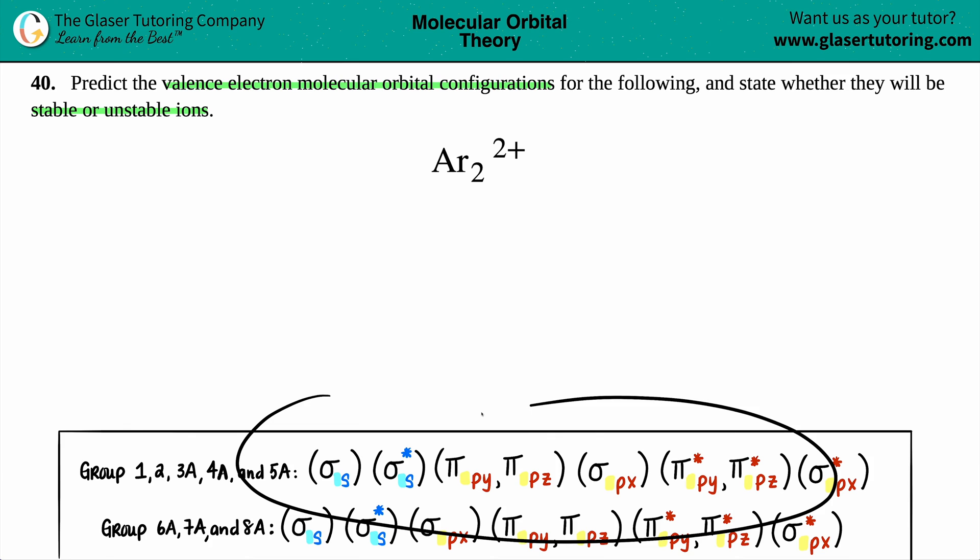The first thing is we're dealing with argon on the periodic table. If we scan the periodic table, we're going to find that argon is in group either 8A or group 18, depending on what your periodic table says.